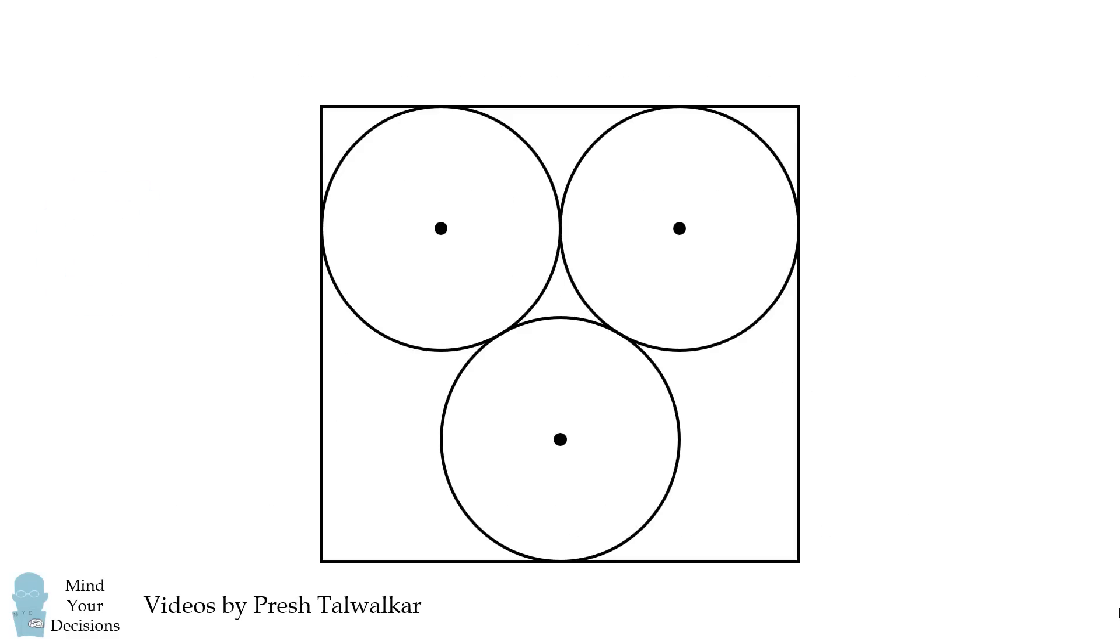So to get the area of this rectangle, we want to solve for the length and the width. We can solve for one dimension by drawing in these radii of the circles. We see that this side of the rectangle will be the sum of these lengths, which is 4r.